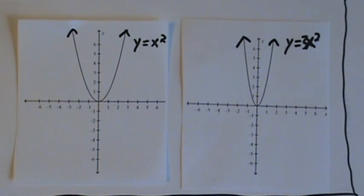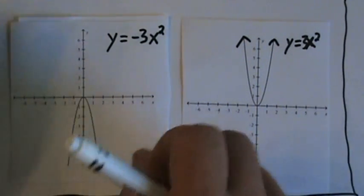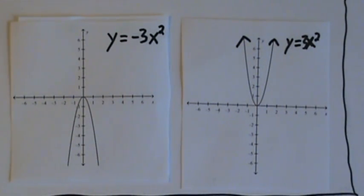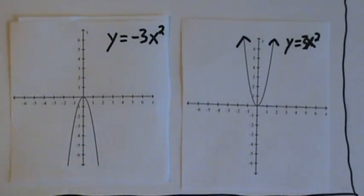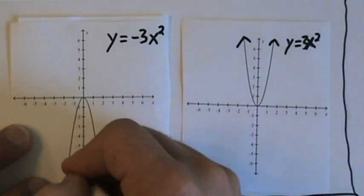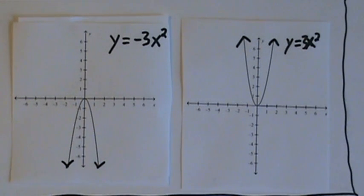Now let's look at the graph of y equals negative 3x squared. Notice these are exactly the same, except this one is pointing down. They have the same shape, they're just pointing in different directions.